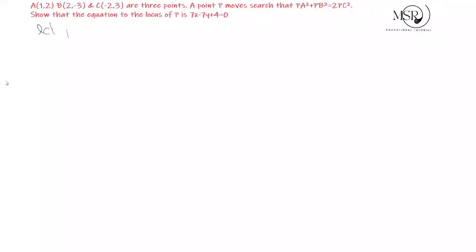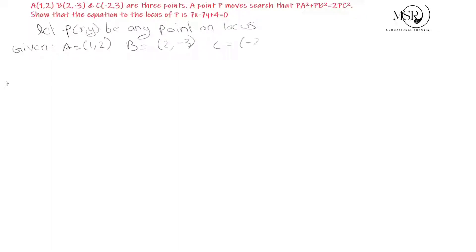Let P be any point on the locus. C is equal to (-2, 3). Given condition: PA² + PB² = 2PC².